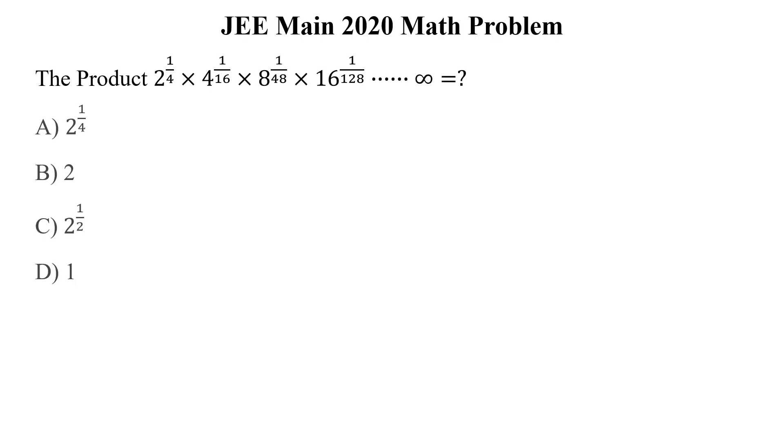Let's begin to solve the question. The question is the product 2 to the power 1 by 4 multiplied by 4 to the power 1 by 16 multiplied by 8 to the power 1 by 48 multiplied by 16 to the power 1 by 128, and so on. What is the correct option?